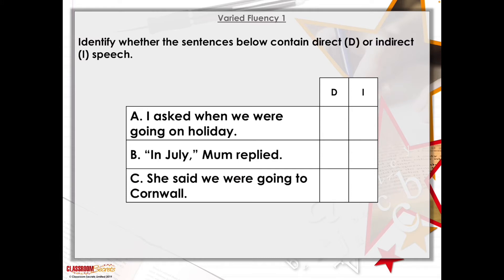Let's have a little look at these examples. 'I asked when we were going on holiday.' That is indirect speech, because you're just saying that you asked that question. You haven't said, 'I said to my mum, when are we going on holiday, mum?' — which would have been direct speech. A good clue is to look for the inverted commas; they are always used around direct speech. So A is indirect. B, 'In July, mum replied' — mum actually said that, and there are inverted commas, so this is direct speech. C, 'She said we were going to Cornwall' — no inverted commas, just recalling what you were told, so that is indirect speech.